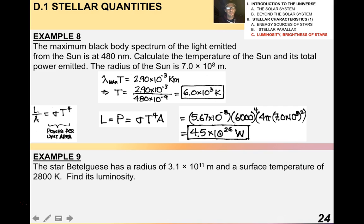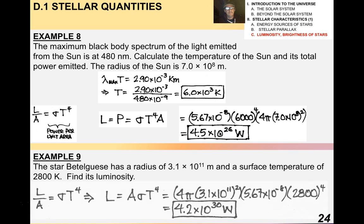The last example for this video: the star Betelgeuse has a radius of 3.1 times 10 to the 11 meters and a surface temperature of 2,800 Kelvin — find its luminosity. Very simple application: L equals A σ T to the fourth. Rearranging, you get 4.2 times 10 to the 30 watts.